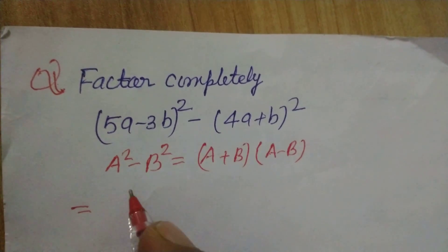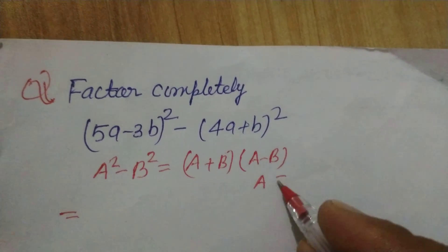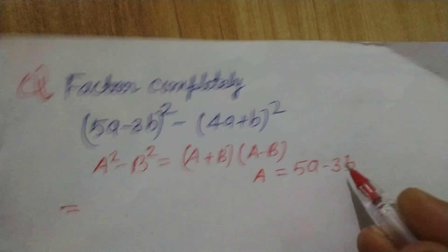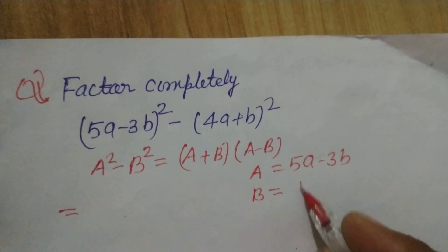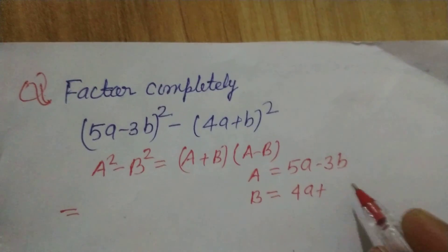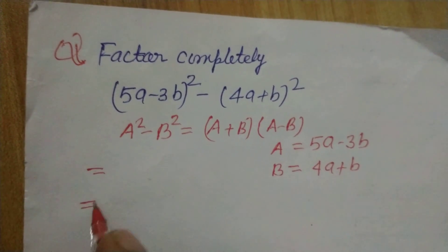Now we write here a is 5a minus 3b and b is 4a plus b. So we use the identity here.